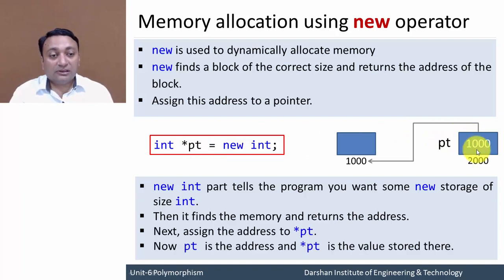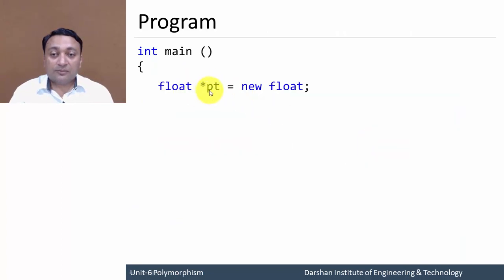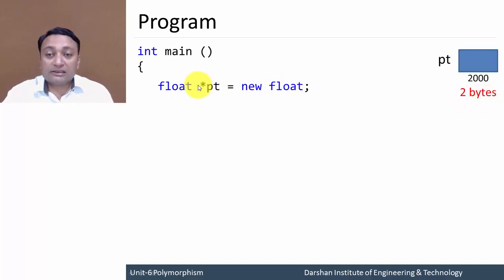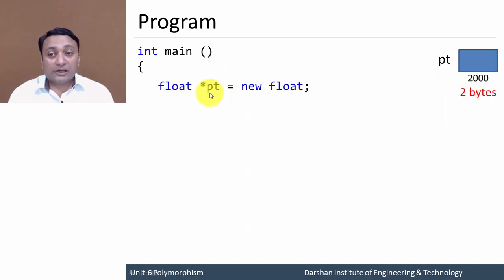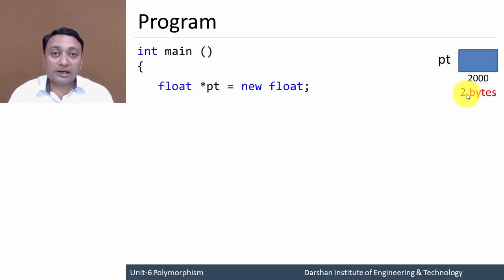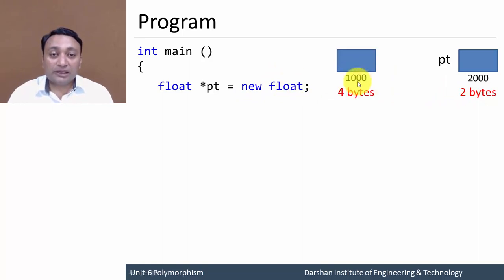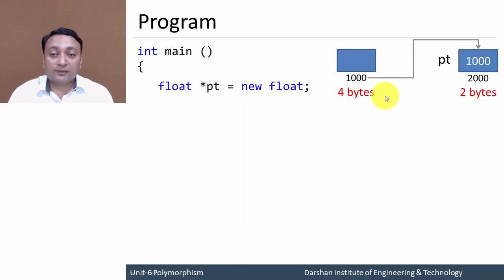When you print pt only, it will print the address; if you write star pt, it gives you the value at that address. In the program, I'm creating one pointer variable of type float and assigning one float memory block. It occupies two bytes because it stores an address, which is always an unsigned integer of two bytes. Any pointer variable — whether float, char, or otherwise — will occupy two bytes. New float finds a new memory block with some address and stores this address in the pointer variable.